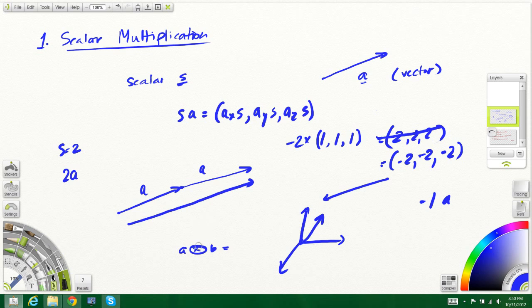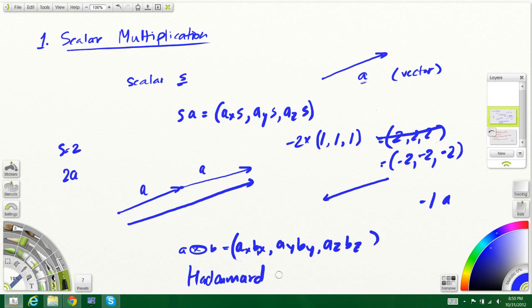Secondly, when we multiply two vectors together, for example, if we have a vector a and a vector b, it would look like ax times bx, ay times by, and az times bz. This is called a Hadamard product.